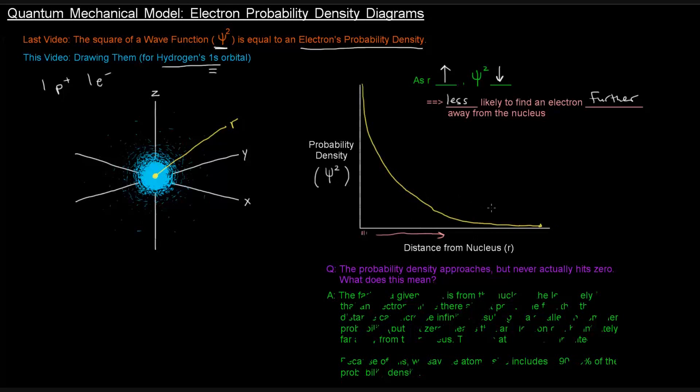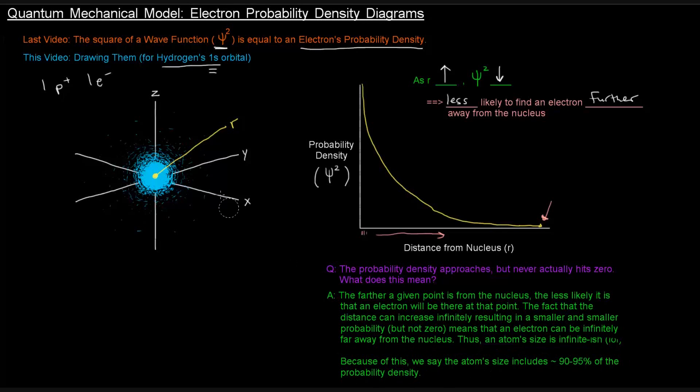The probability density gets smaller and smaller as the r value continues to get big. But this value here approaches zero. The probability density approaches zero, but it never actually hits zero. So what does that mean? So this says, the farther a given point is from the nucleus, the less likely it is that an electron will be at that point. That makes sense, given what we just said. Further away, less likely to find an electron there.